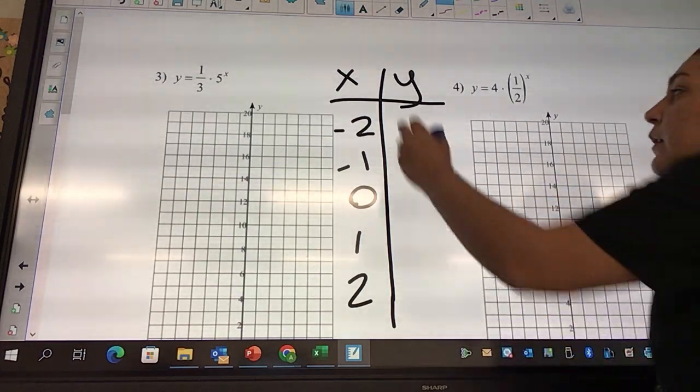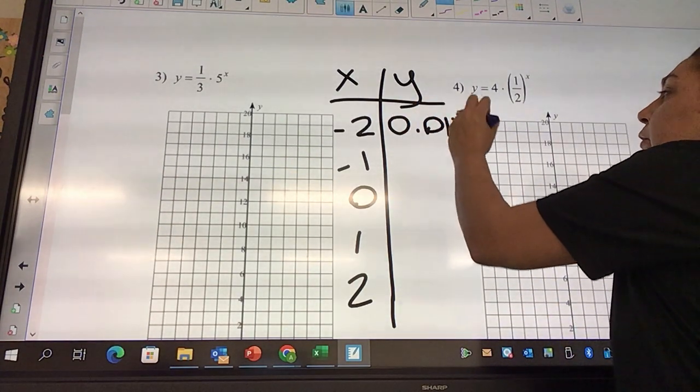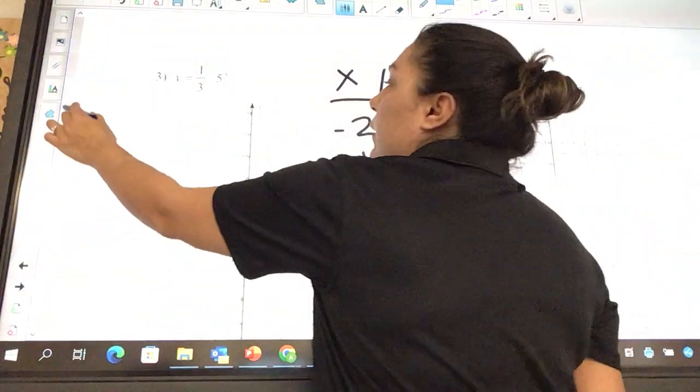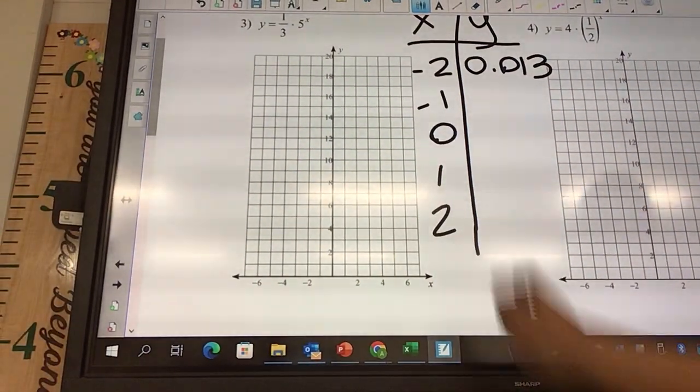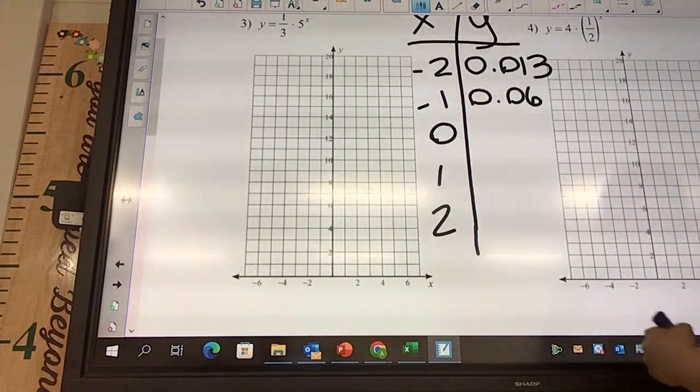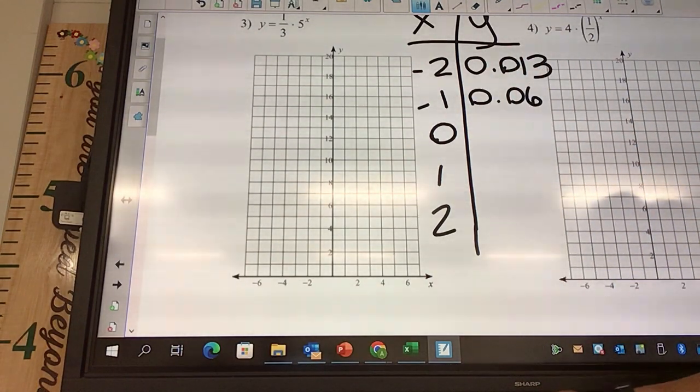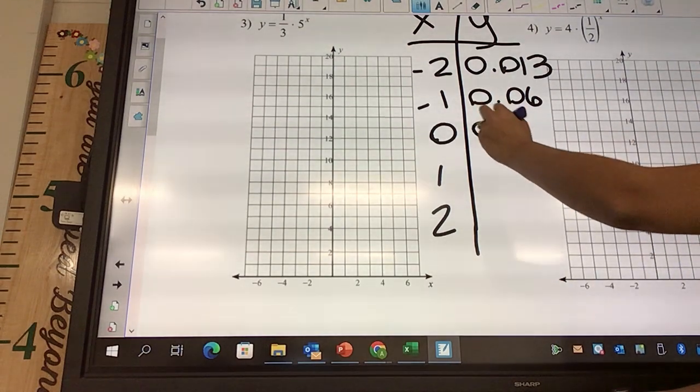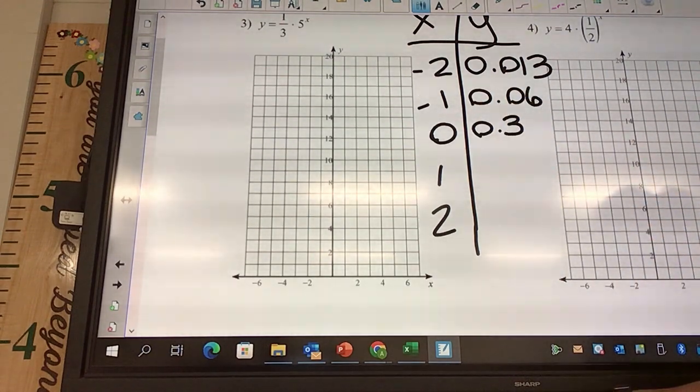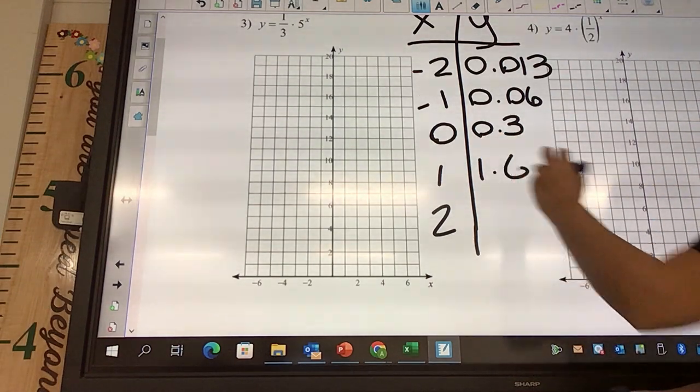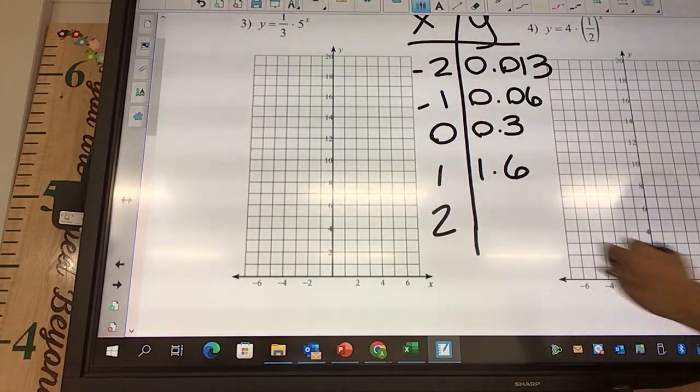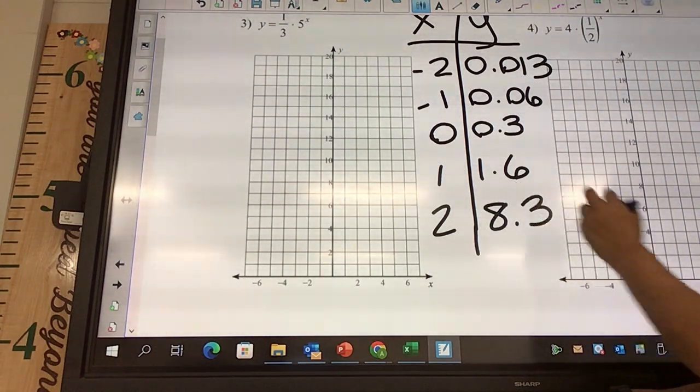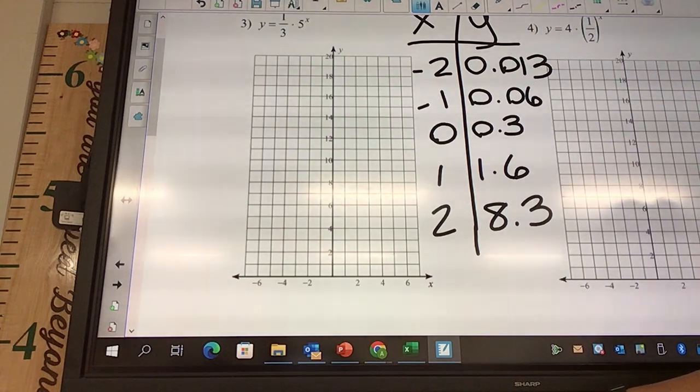0.013. 0.06. 0.3. 1.6. 8.3. Somebody agree with these numbers? I hope. Yeah. Okay.